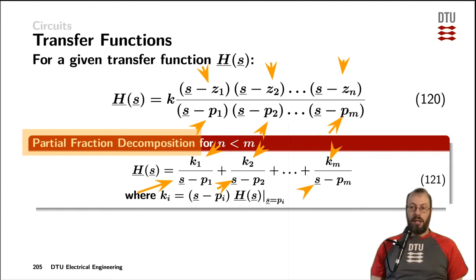Now each of those K's on the i-th position can be calculated down here. So you use the original transfer function from equation 120 and put s equals to exactly that pole. Furthermore, you multiply that transfer function at that pole with that exact pole which you want to derive the coefficient Ki for.